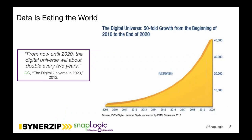To drill down on this a bit: years ago Mark Andreessen wrote 'software is eating the world' — now data is eating the world. From now until 2020, the digital universe will double every two years. Think about what the Internet of Things will bring in terms of data volumes — the exhaust of the Internet, mobile devices, and what Pokemon Go is doing from a data explosion perspective. The digital universe is experiencing 50-fold growth from the beginning of 2010 to the end of 2020. It's just an amazing time for data, driving changes to how organizations manage it.